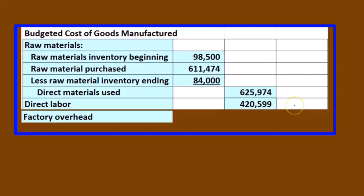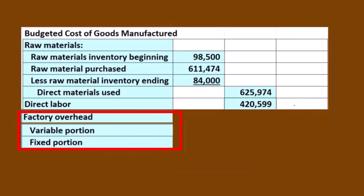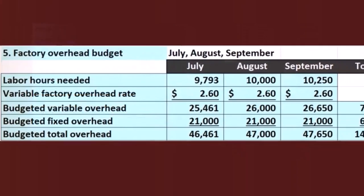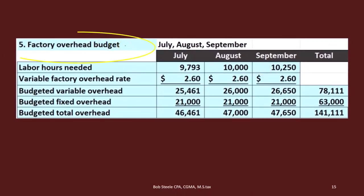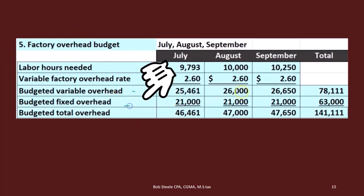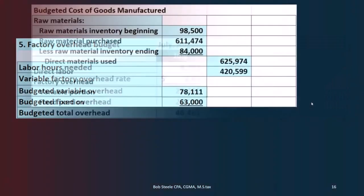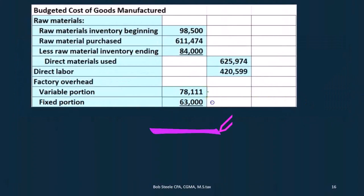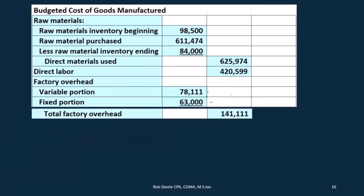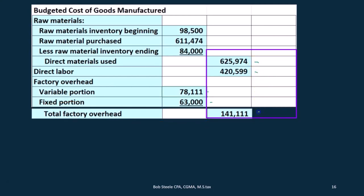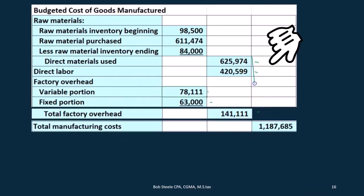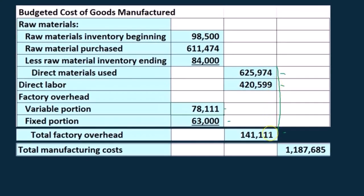Next is factory overhead. We now have direct materials and direct labor, so the next piece is factory overhead — both the variable portion and the fixed portion. We jump back to Step 5, the factory overhead budget, to get those two numbers. The variable portion is $78,111 and the fixed portion is $63,000, giving us total factory overhead of $141,111. We now have all three components in the outer column: direct materials, direct labor, and factory overhead.